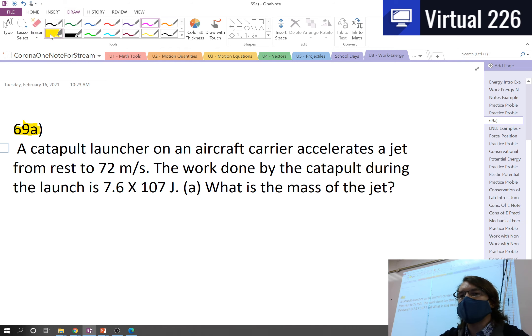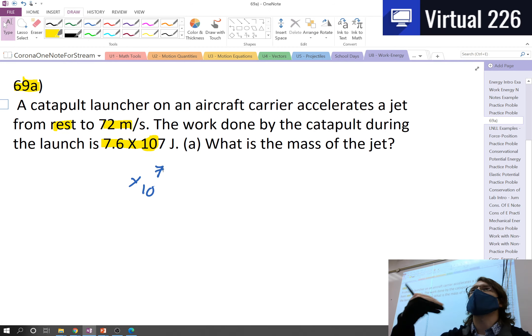So it accelerates a jet from zero, from rest, to 72 meters per second. The work done by the catapult during the launch is 7.6 times 10 to the 7th joules. We just want to know, what is the mass of the jet? So if we know how much work is done and we know the change in speed, we're just looking for a mass.